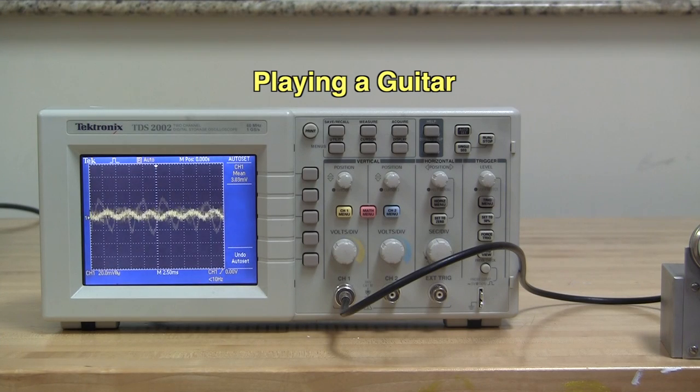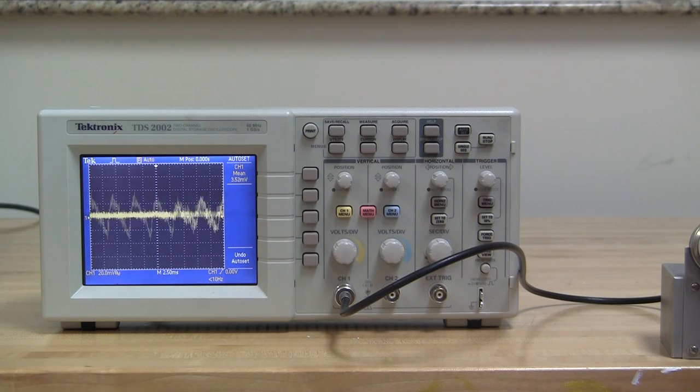We can also look at the sound waves produced by plucking the strings on a guitar. How do these waves differ from those produced by the recorder?